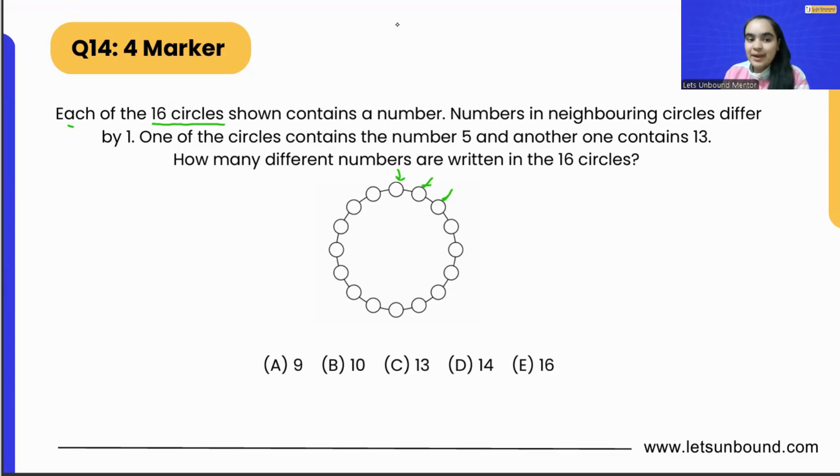Numbers in neighboring circles differ by one. One of the circles contains the number 5 and another one contains 13. We know that there has to be one 5 in it and one 13 should be there in it.